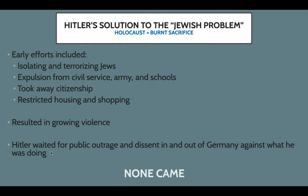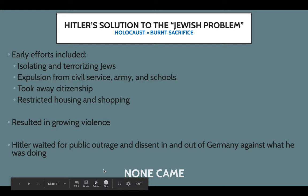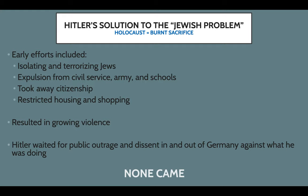You'd think someone would speak out about all of this. Hitler waited — he was smart enough to know someone might say something. But when he waited for public outrage and dissent both inside and outside Germany, none came. Nobody spoke up. The reason was isolationism — the United States and much of the rest of the world were practicing that. After World War One, everyone was in the Great Depression. Nobody's doing great economically. When your family has no money, no house, no food, you're probably not worried about another country or helping another group of people. You're worried about yourself.